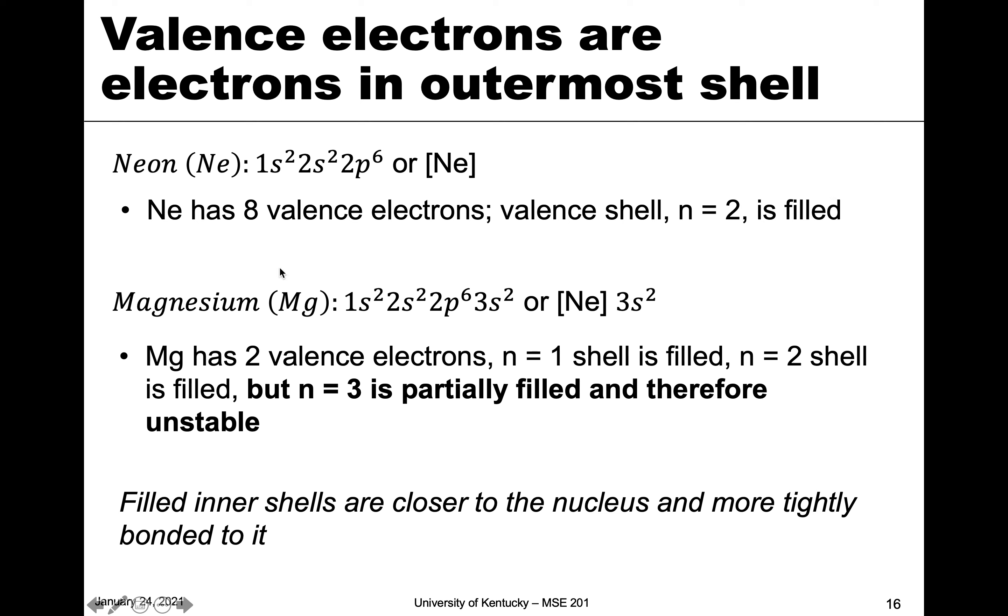Now let's go to magnesium. Magnesium basically has the same structure except for two more electrons in the 3S. So here, the outermost shell is not one, two, but three. And there are two valence electrons in that outermost shell.